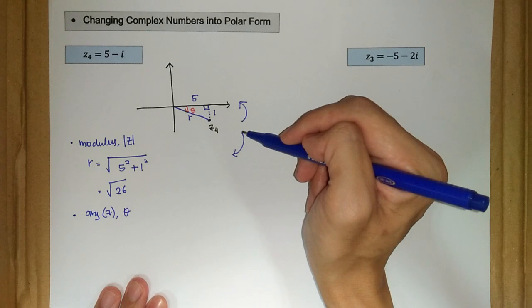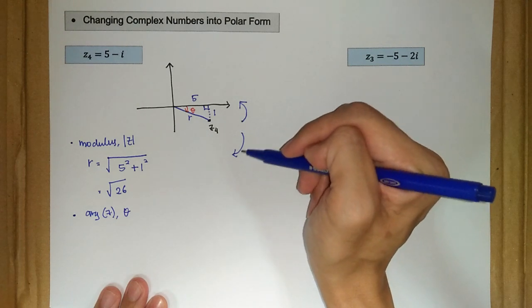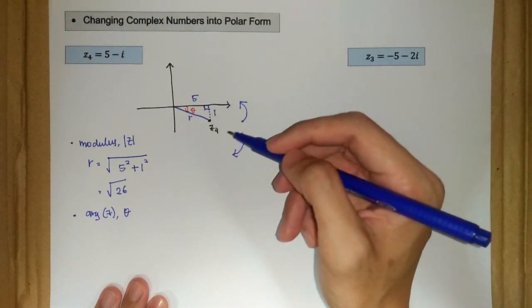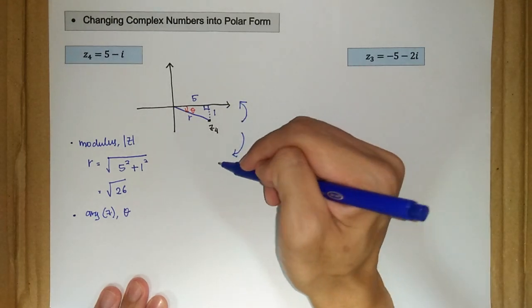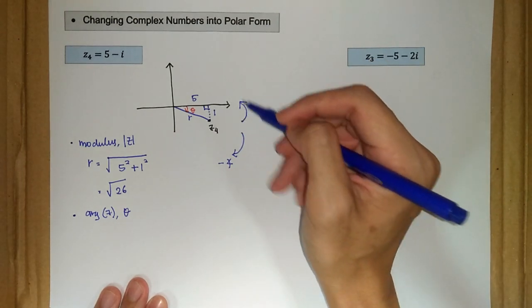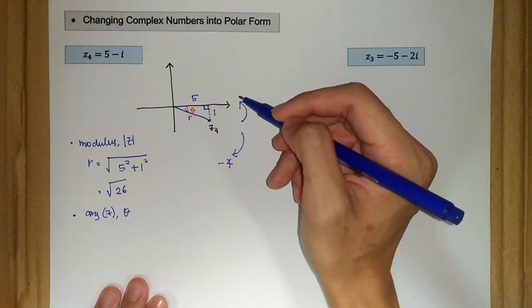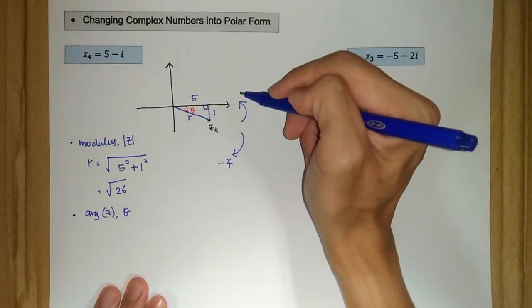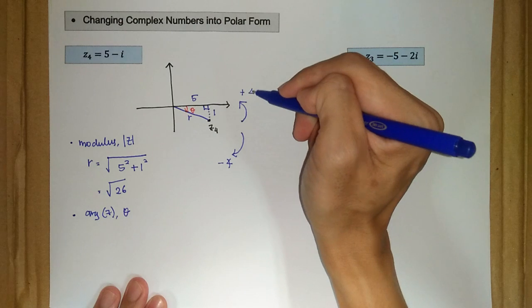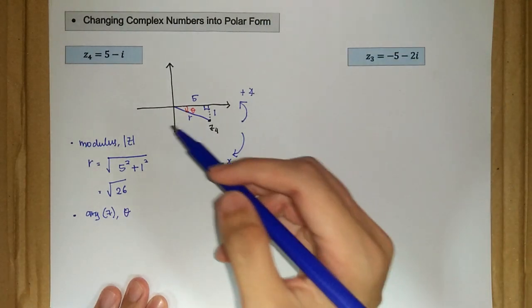When we rotate something in clockwise rotation, it is represented by negative angle. So negative angle. And when we rotate something in anticlockwise direction, we denote it with positive angle.